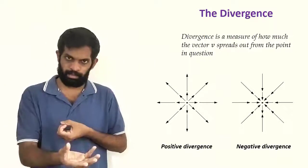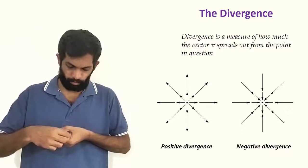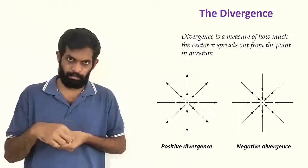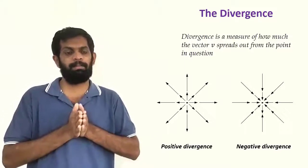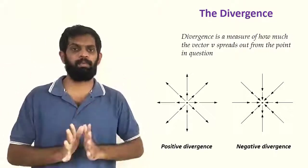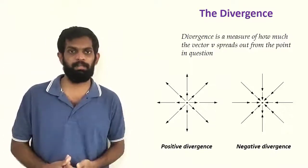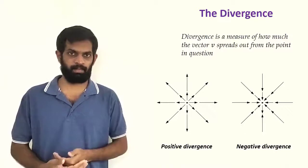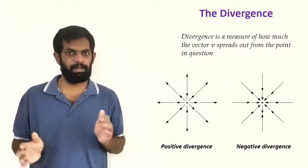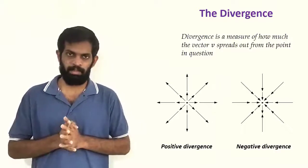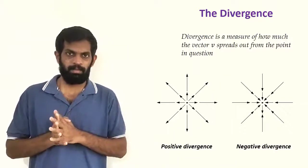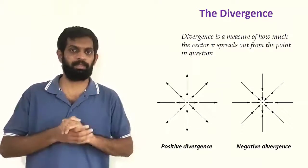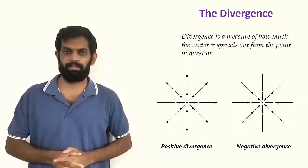If you move the pipe, there is a point at the tip of the pipe. The point of the pipe is where things spread out — that is the divergence. If it comes to a different problem, it is a different concept.